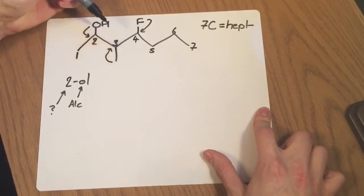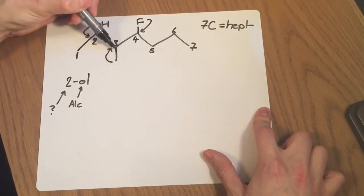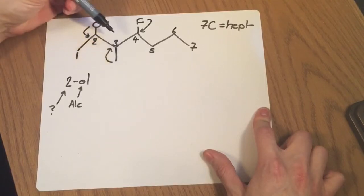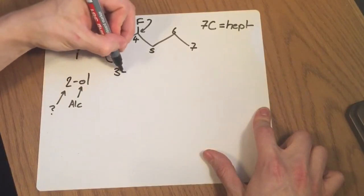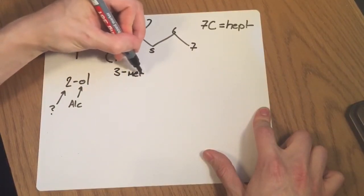What about what's on carbon three? Well it's not drawn out for us because it just looks like a line, it just looks like a stick. But at the end of this is actually a CH3. So that is a methyl and it's on carbon three. So as part of the name that is going to be 3-methyl.